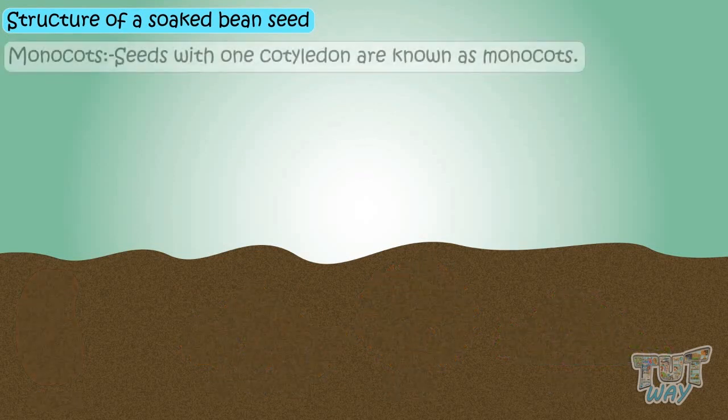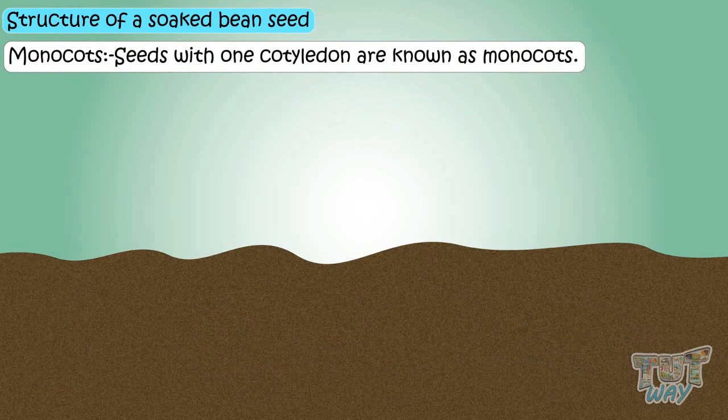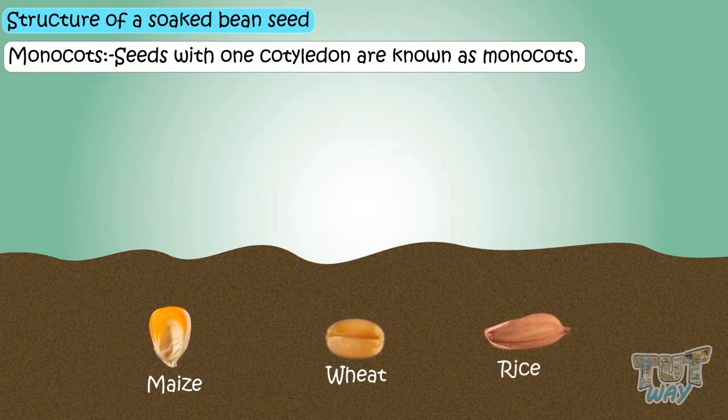There are also seeds with one cotyledon, known as monocots. Maize, wheat, and rice have one cotyledon, so are called monocots.